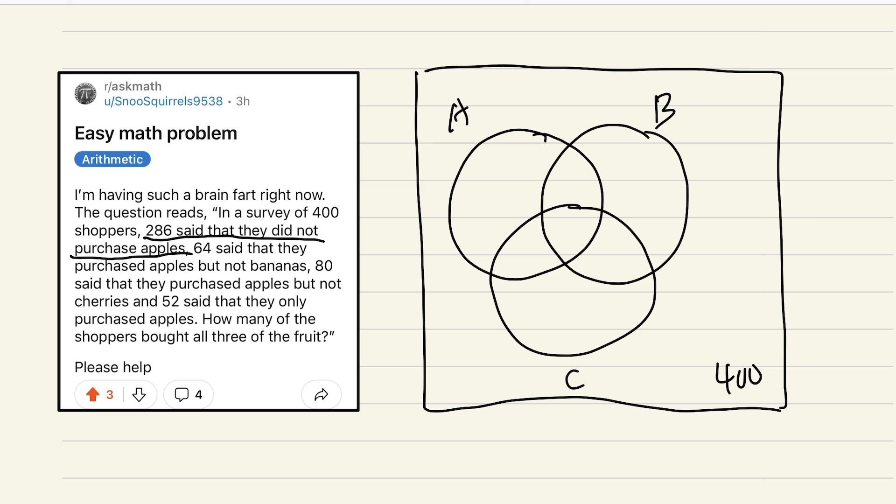So what that means is these people, all this outside of the apple circle, all the yellow parts have to be added to be 286. And now, if you think about the complement way, if we go ahead and do 400 minus 286, which is 114.